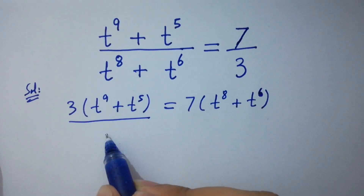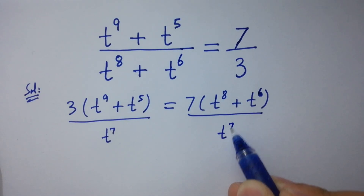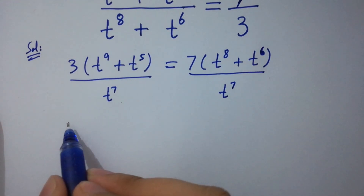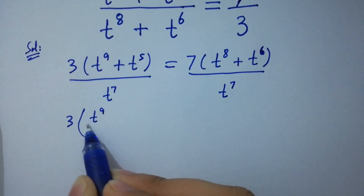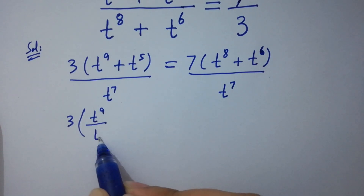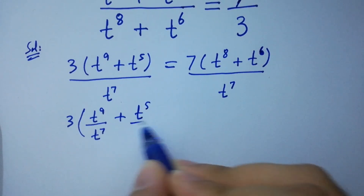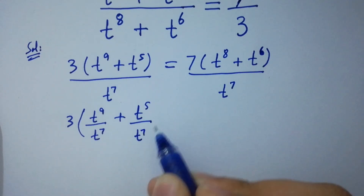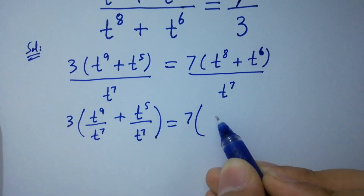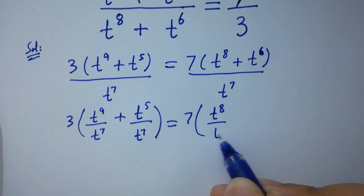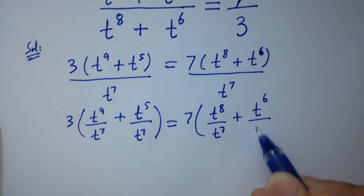Divide by t to the power 7 on both sides. Then it will be 3 times t to the power 9 over t to the power 7, plus t to the power 5 over t to the power 7, equal to 7 times t to the power 8 over t to the power 7, plus t to the power 6 over t to the power 7.